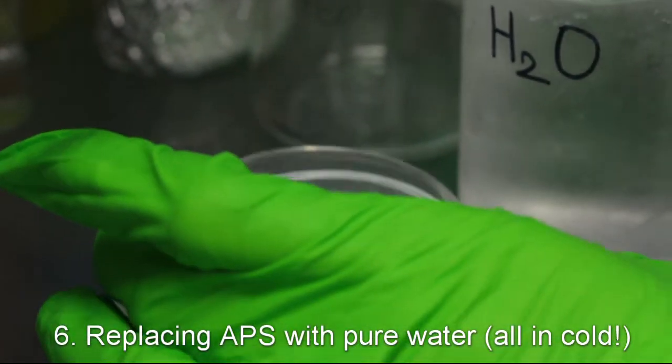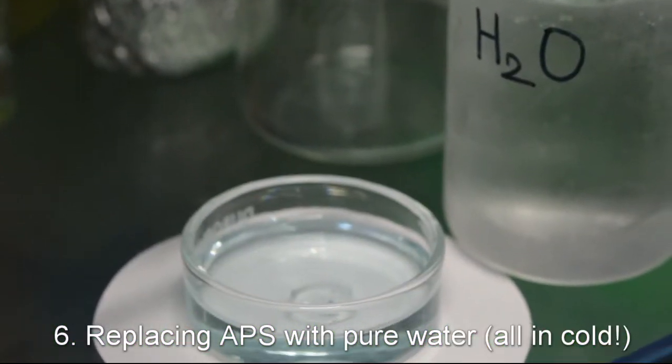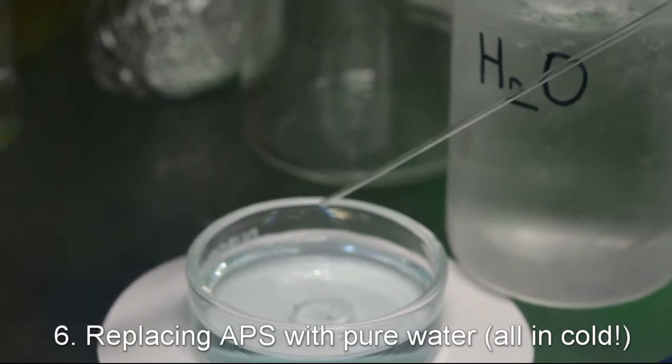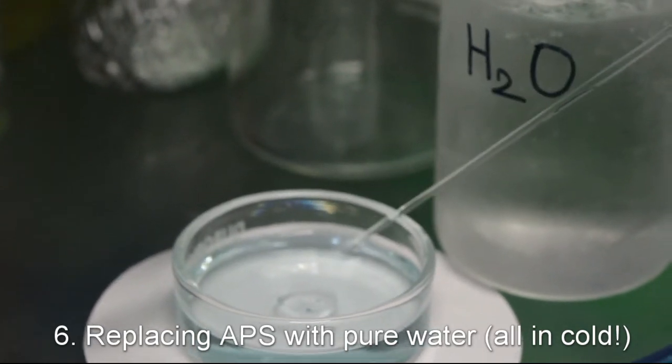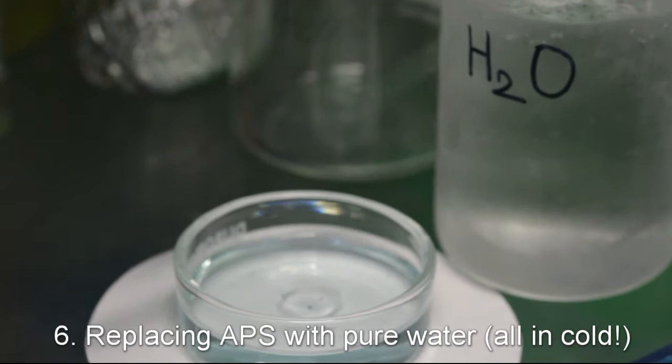After copper is fully etched, we replace the ammonium persulfate solution with pure water that we cooled down previously in order not to have salt crystals on graphene surface.